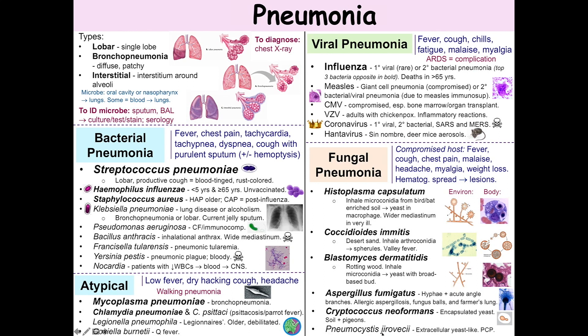Finally, Pneumocystis jirovecii is an extracellular yeast-like organism that has cholesterol instead of ergosterol in its cell wall. It is inhaled into the lungs where it attaches to the alveolar wall, grows, and is shed into the alveoli, where it appears as cysts that often look like crushed ping-pong balls.